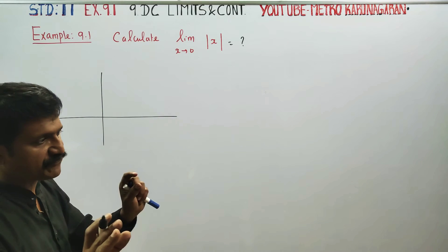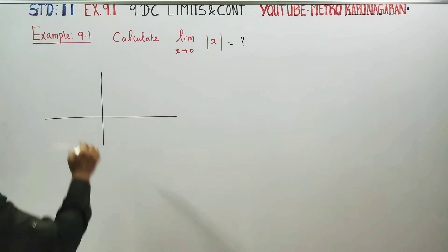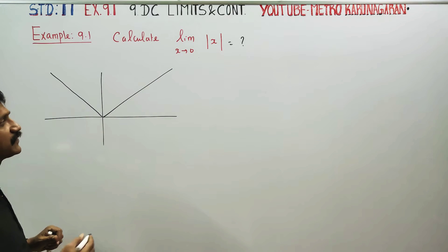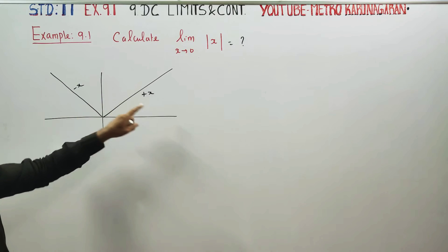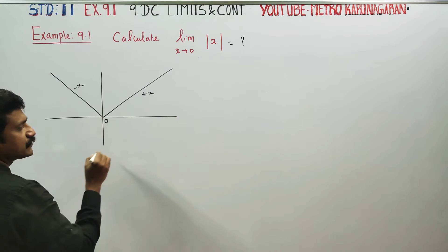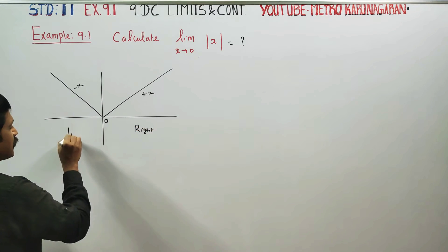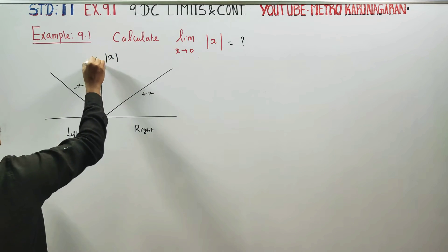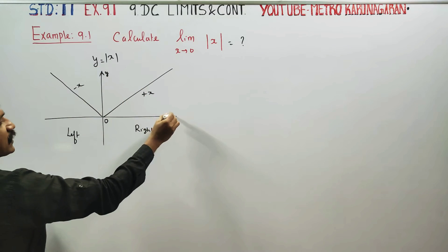Modulus of X graph — this is called the Modulus of X graph. In the graph, we have plus X and minus X. This is 0 in the right direction and this is 0 in the left direction. In the graph, Y is equal to modulus of X. This is a diagram showing the Y-axis and the X-axis.